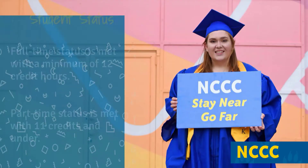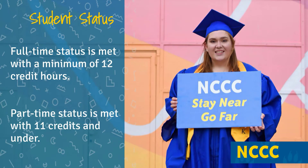As a registered student, you will also fall into one of two status categories: full-time or part-time. Full-time students are enrolled in 12 or more credit hours, and part-time students are registered for 11 credit hours and under.